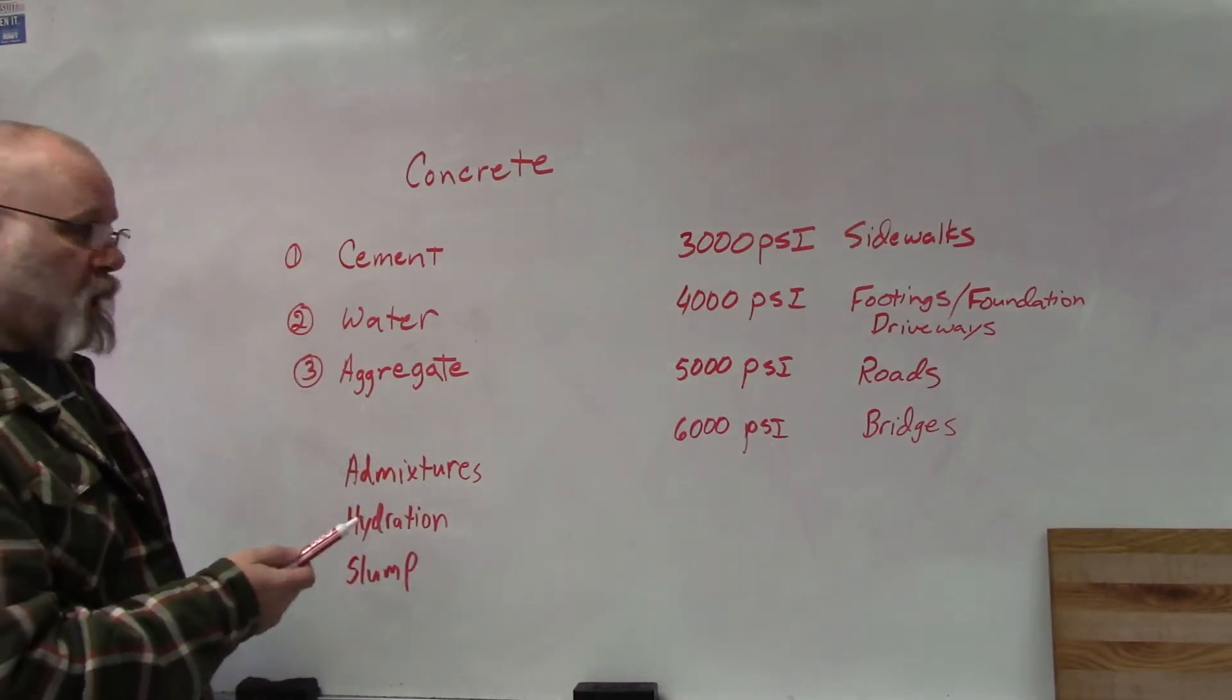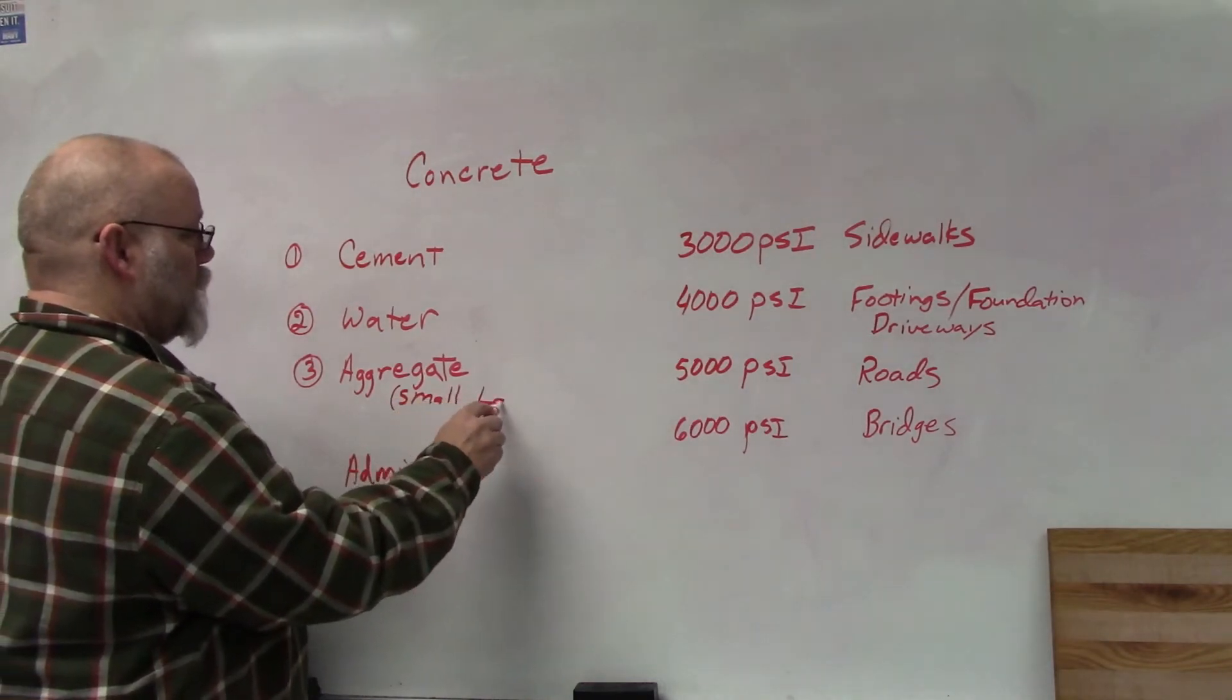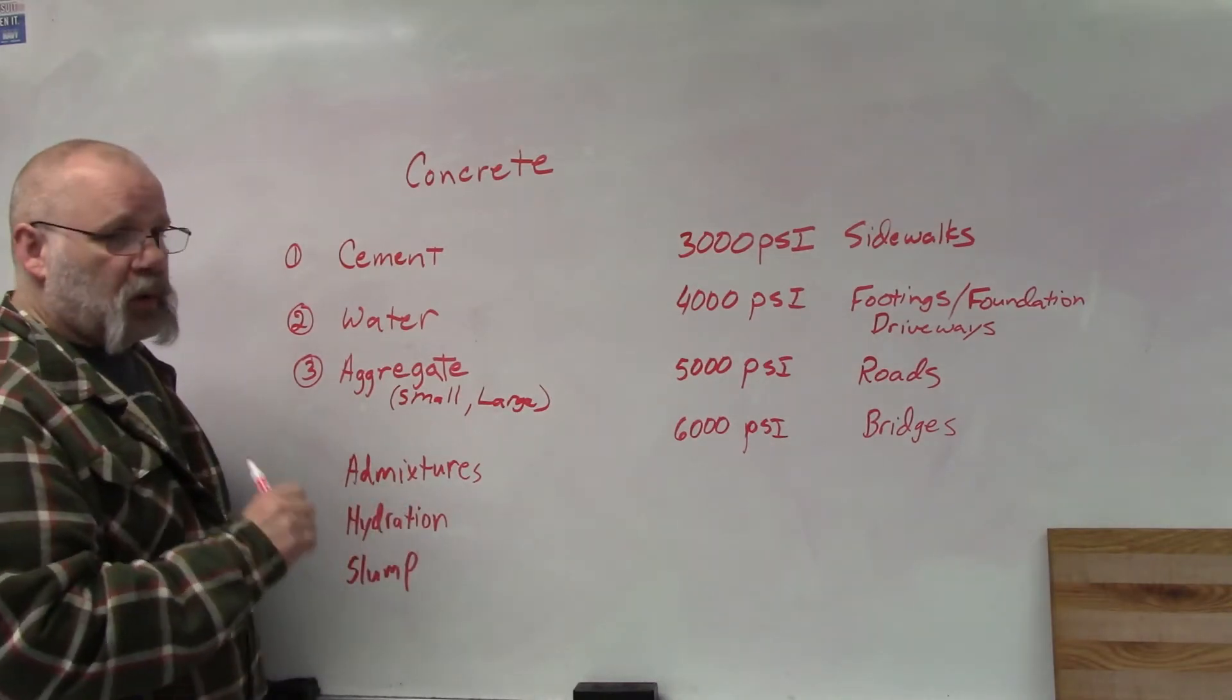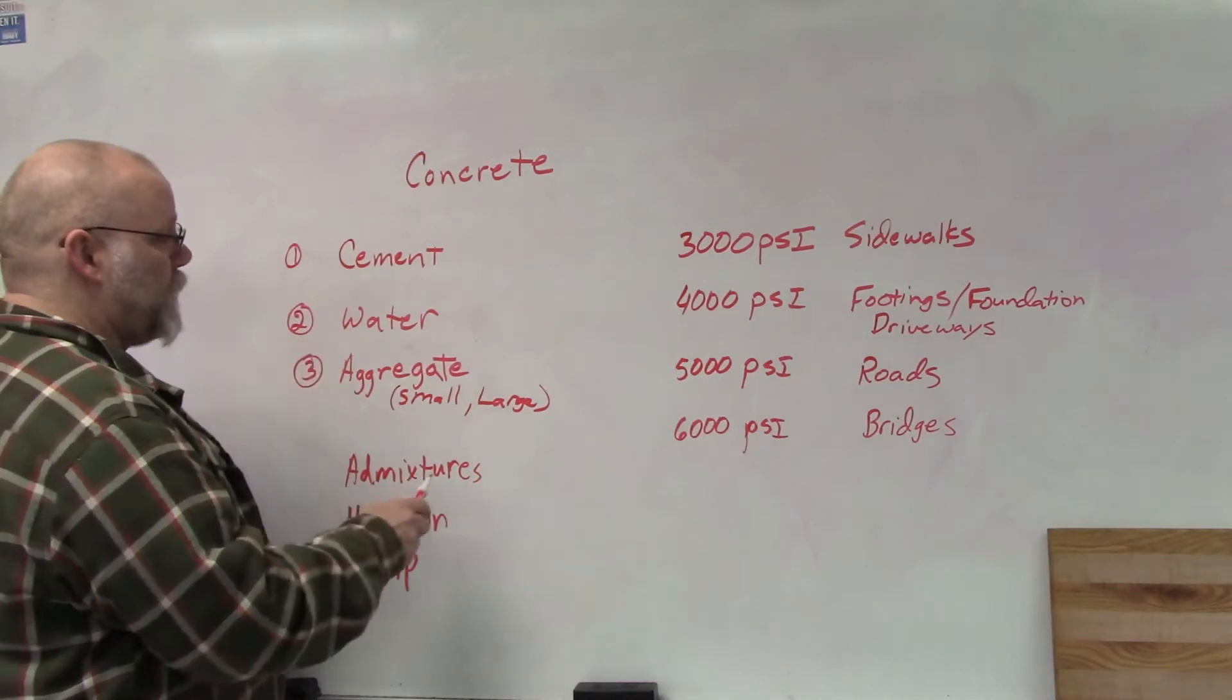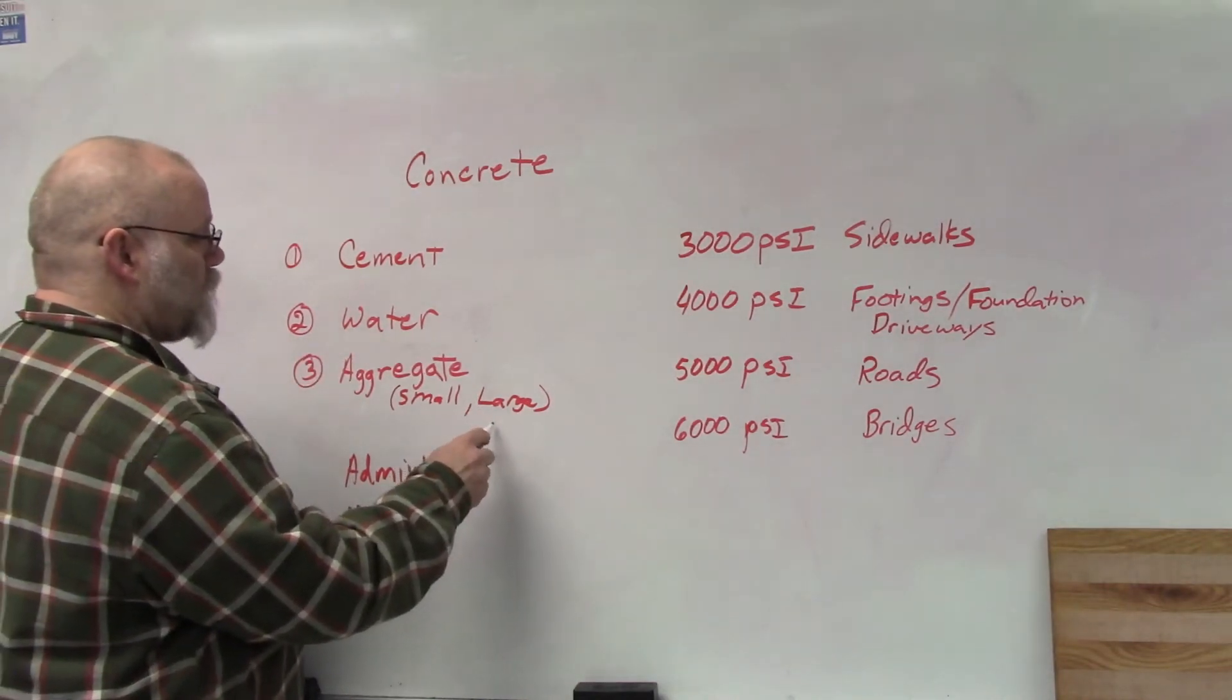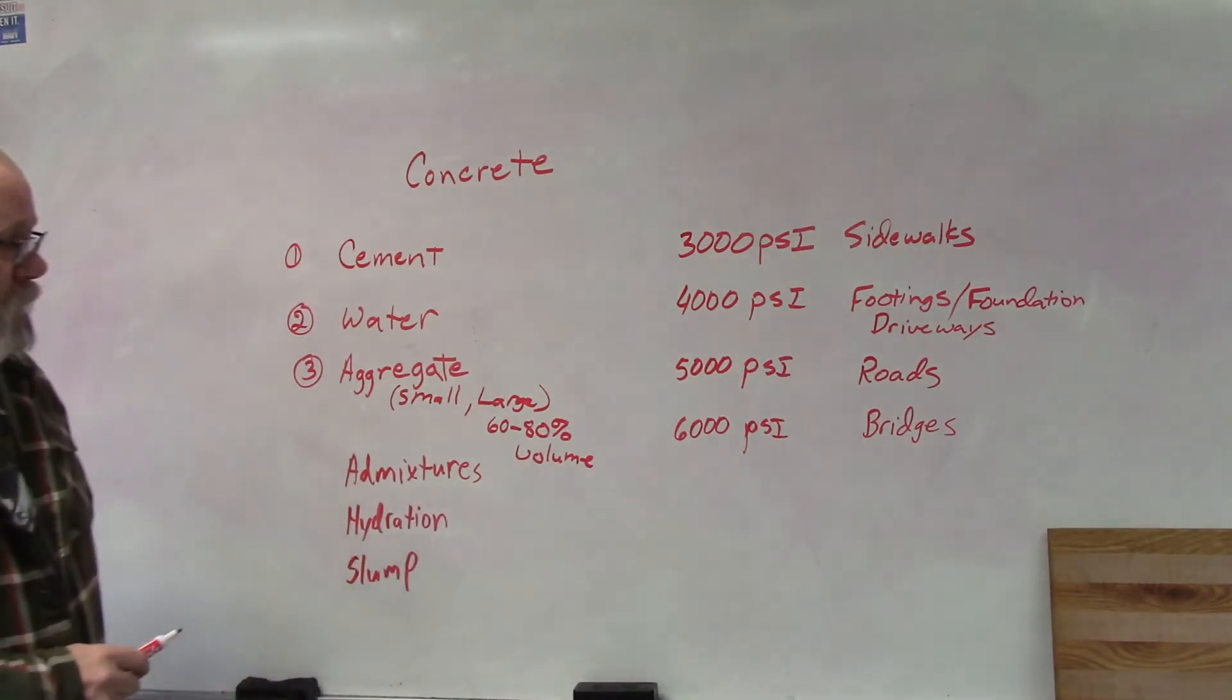In concrete there are two types of aggregate. Usually there's a small aggregate and a large aggregate. The small aggregate is usually in the form of sand, and the large aggregate will be the larger rock that is placed into the concrete. The large aggregate usually makes up between 60 and 80 percent of its volume.